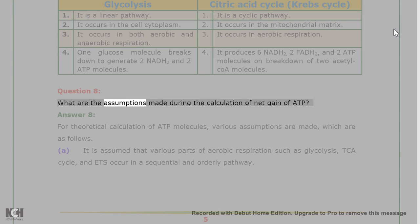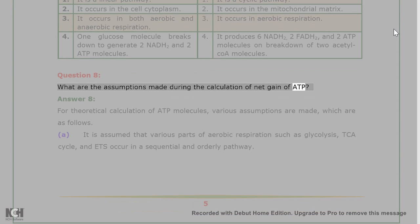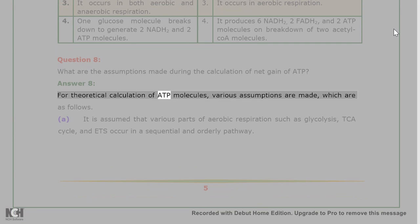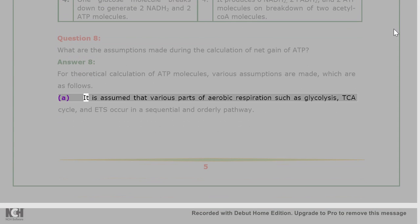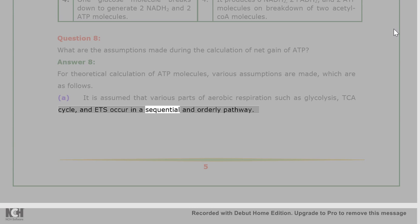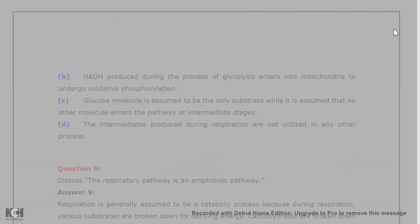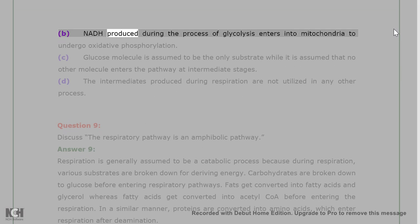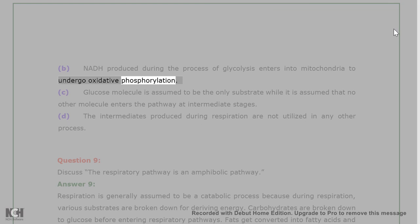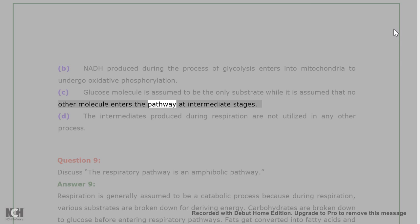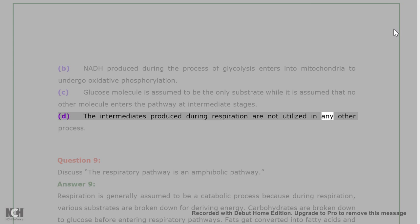Question 8: What are the assumptions made during the calculation of net gain of ATP? Answer 8: For theoretical calculation of ATP molecules, various assumptions are made: (a) glycolysis, TCA cycle, and ETS occur in a sequential and orderly pathway; (b) NADH produced during glycolysis enters into mitochondria to undergo oxidative phosphorylation; (c) glucose is assumed to be the only substrate and no other molecule enters the pathway at intermediate stages; (d) intermediates produced during respiration are not utilized in any other process.